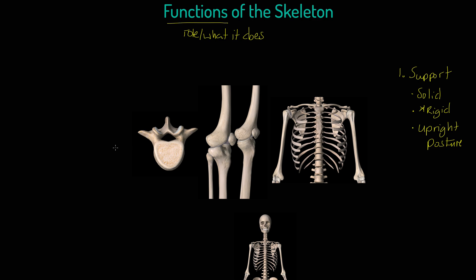What's our second function? I'd like to introduce you to the notion of protection. See if we can add some detail to this. It relates to being solid and rigid. The role of the skeleton is to enclose and protect. You're probably thinking about the cranium and the ribs.